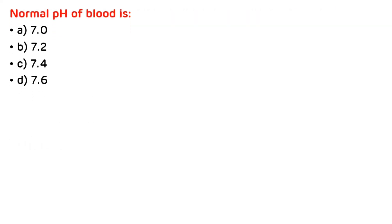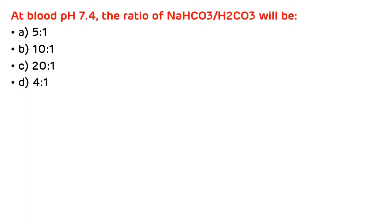MCQ 3: Normal pH of blood is — options: 7.0, 7.2, 7.4, 7.6. The correct answer is 7.4. MCQ 4: At blood pH 7.4, the ratio of NaHCO3 to carbonic acid will be — options: 5:1, 10:1, 20:1, 4:1. The correct answer is 20:1 for the bicarbonate buffer, while for the phosphate buffer it is 4:1.